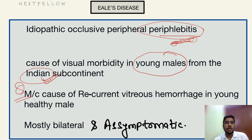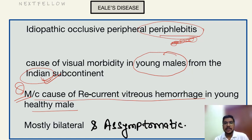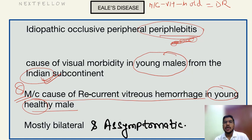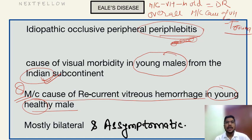The second question always asked in MCQs is: what is the most common cause of recurrent vitreous hemorrhage in a young healthy male? The answer is Eales disease. However, the most common cause of vitreous hemorrhage in an old diabetic patient is diabetic retinopathy, and the overall most common cause of vitreous hemorrhage is trauma.